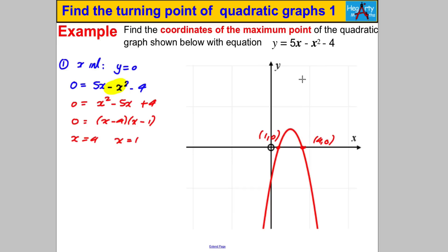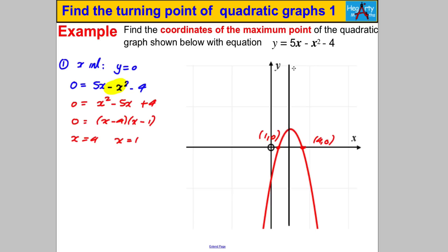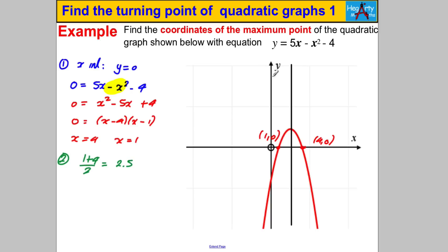Step 2: find halfway between the two roots to find the line of symmetry. We calculate (1 + 4) ÷ 2 = 2.5. So the line of symmetry is x = 2.5.